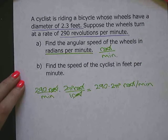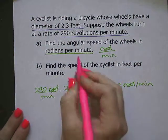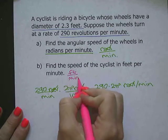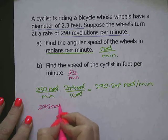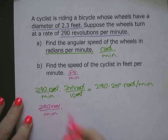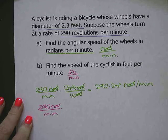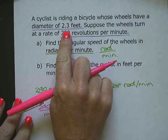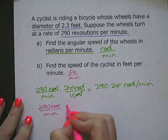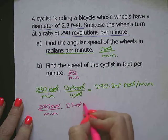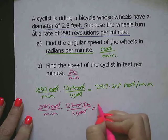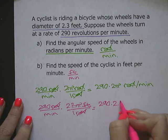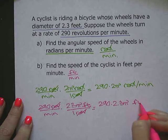Now for the speed of the cyclist in feet per minute. We start with 290 revolutions per minute. The minutes are already there, but we need the number of feet in a revolution. One revolution is the circumference — if the diameter is 2.3 feet, the circumference is 2.3 pi feet. Our revolutions cancel, and we get 290 times 2.3 pi feet per minute.